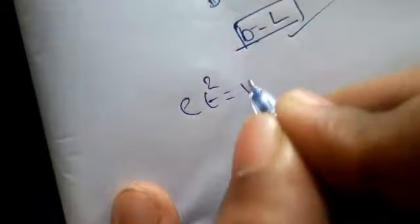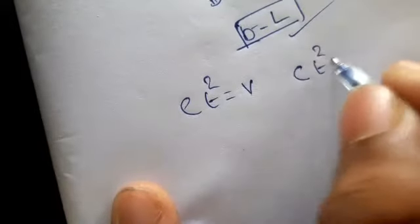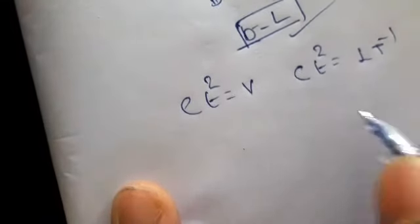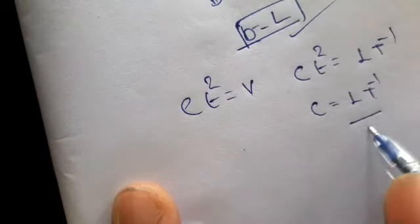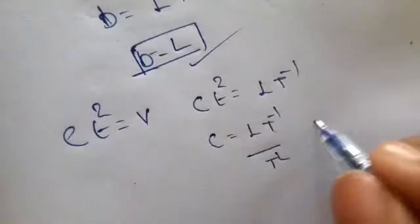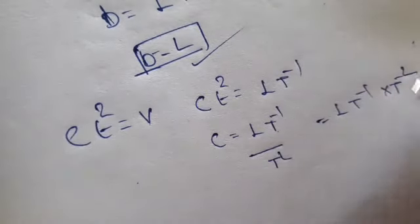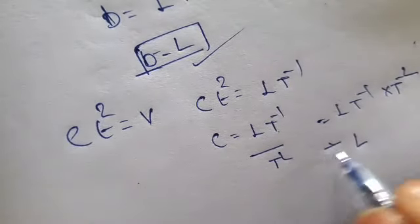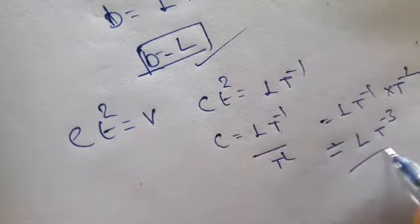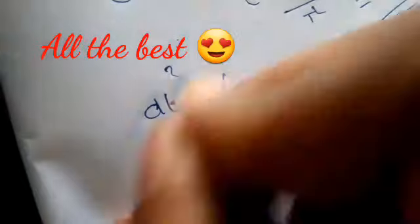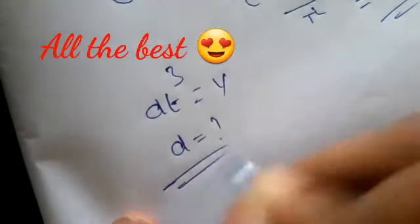What will be the dimension of C? Equate the term which is given here separately. CT squared equals velocity. CT squared equals LT to the power minus 1. C equals LT to the power minus 1 by T squared, which is LT to the power minus 3. Like so, find the value of D by equating DT cubed equals velocity. DT cubed equals velocity. Find the dimension of V and comment your answer.